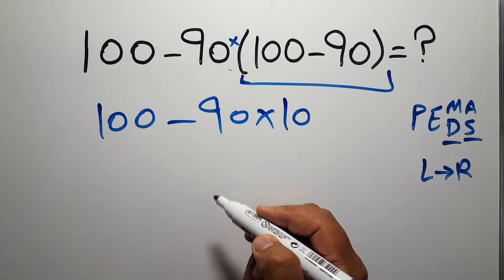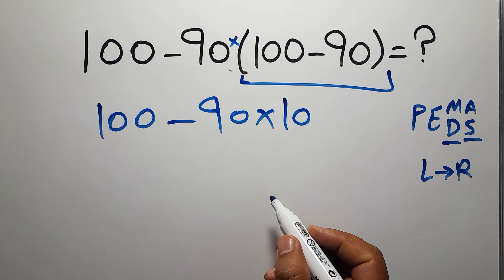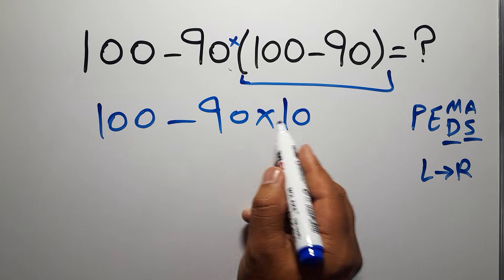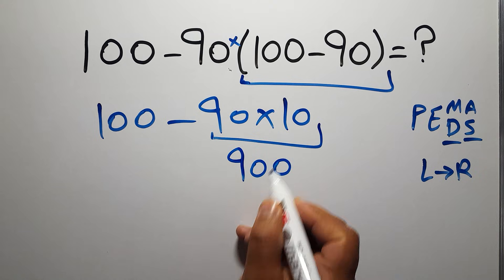So first 90 times 10 which equals 900. So 100 minus 900.